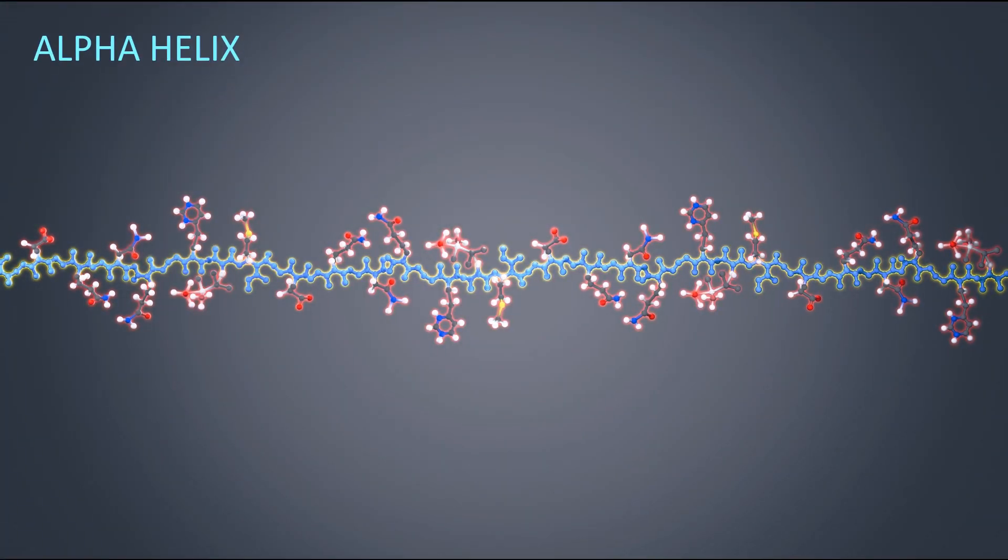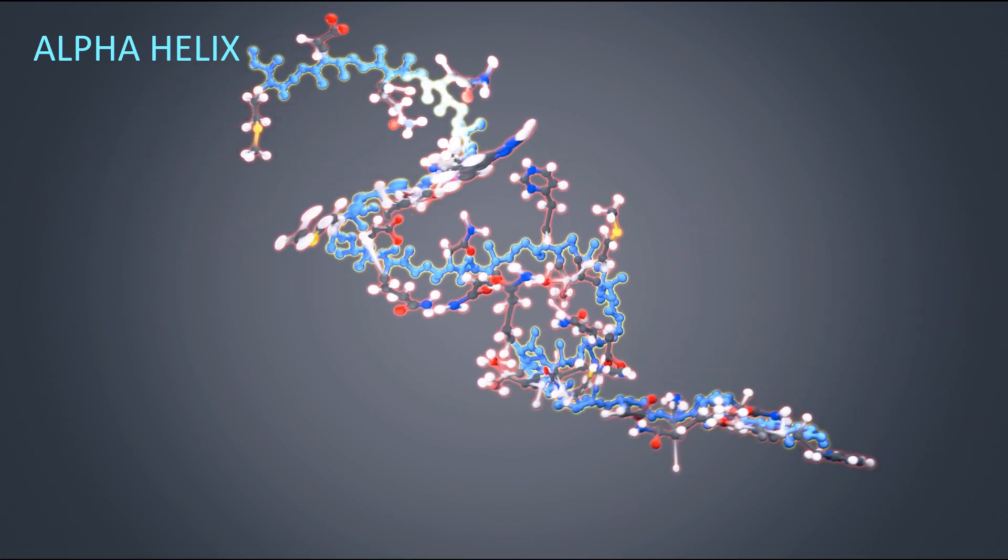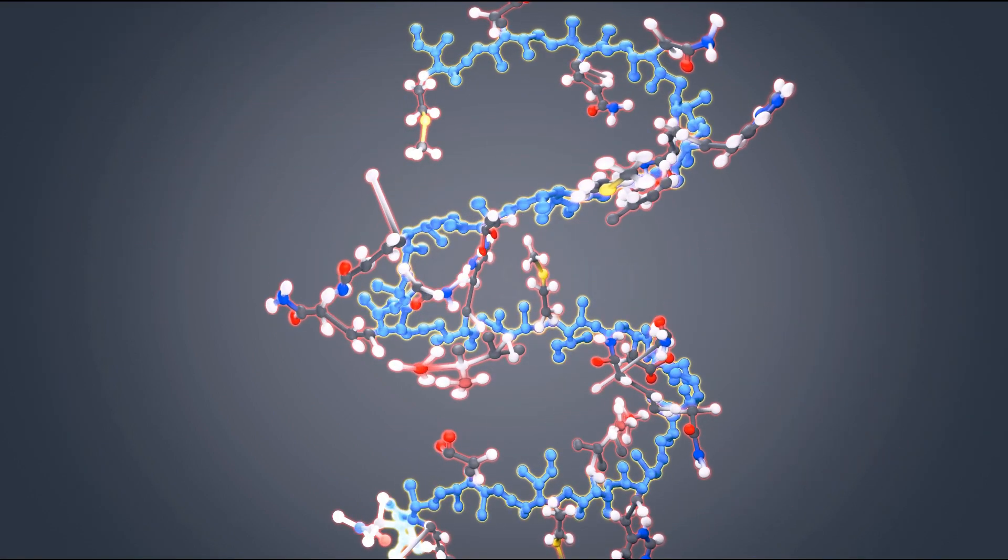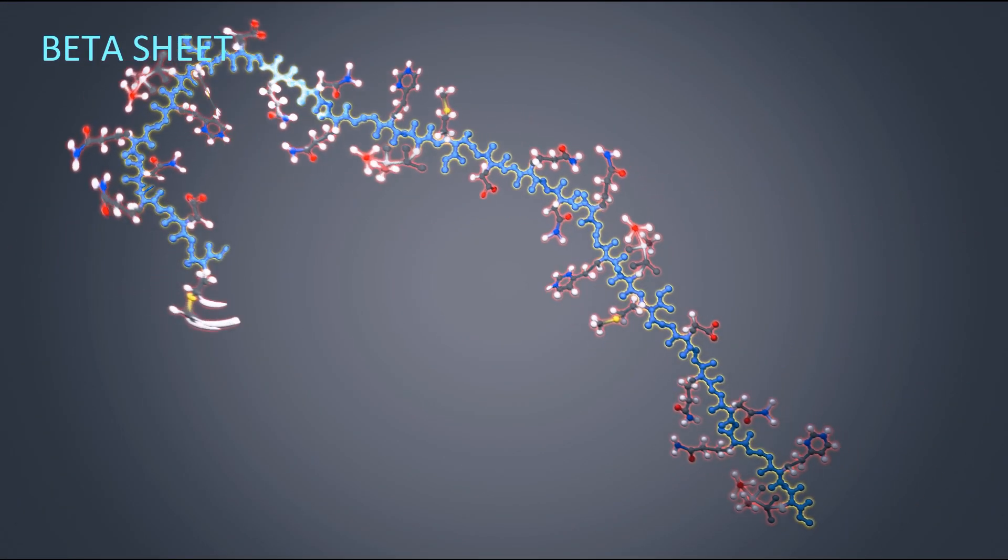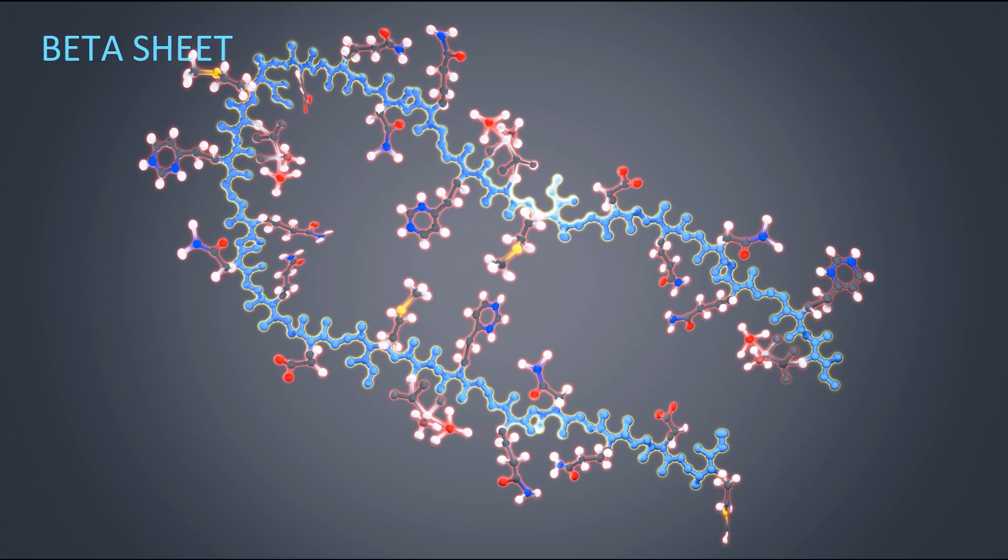An alpha helix is a right-handed coil stabilized by hydrogen bonds between the amine and carboxyl groups of nearby amino acids. Beta sheets are formed when hydrogen bonds stabilize two or more adjacent strands of amino acids.